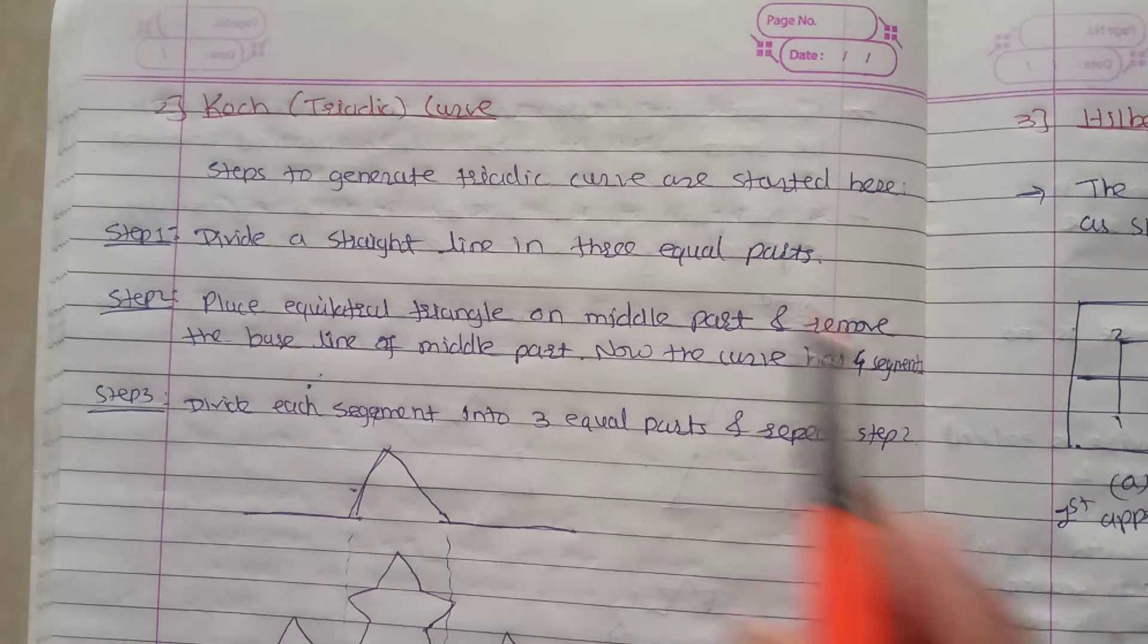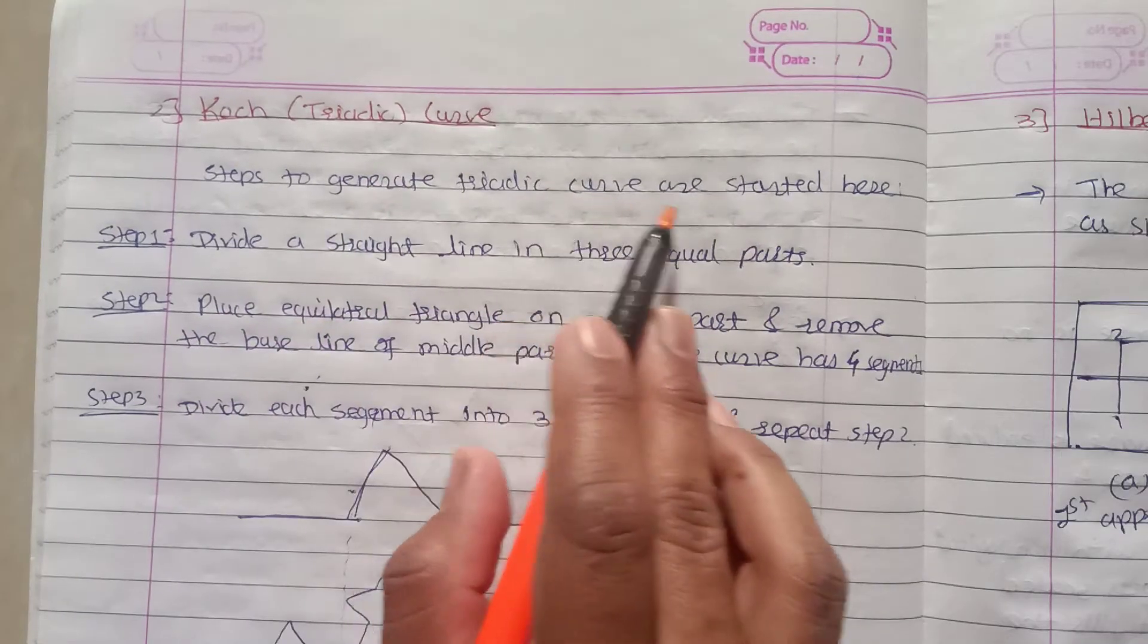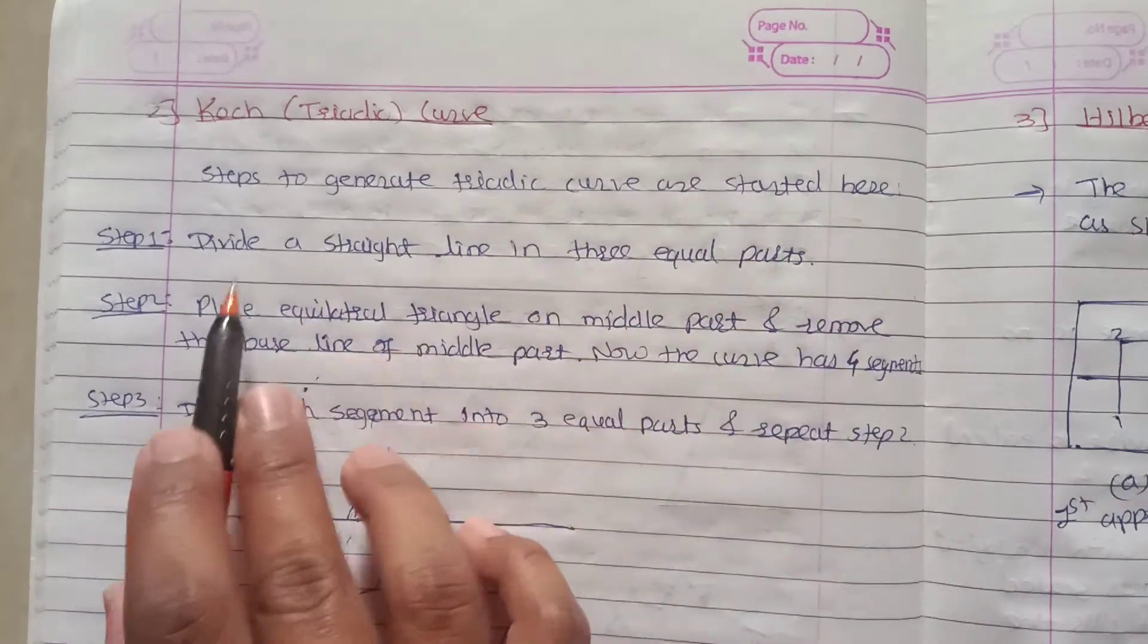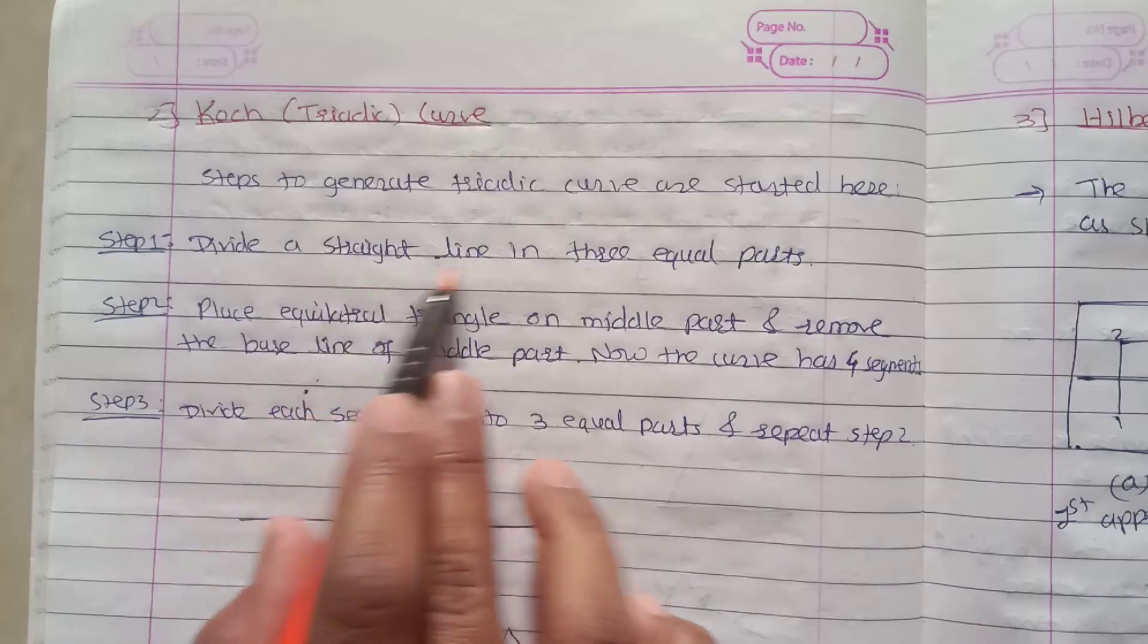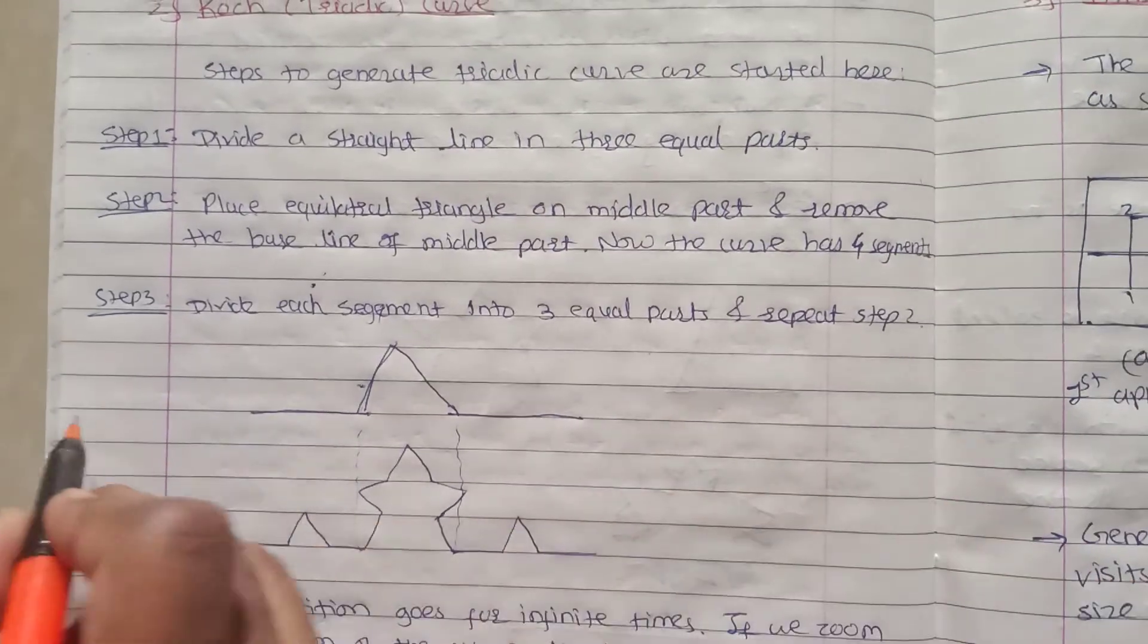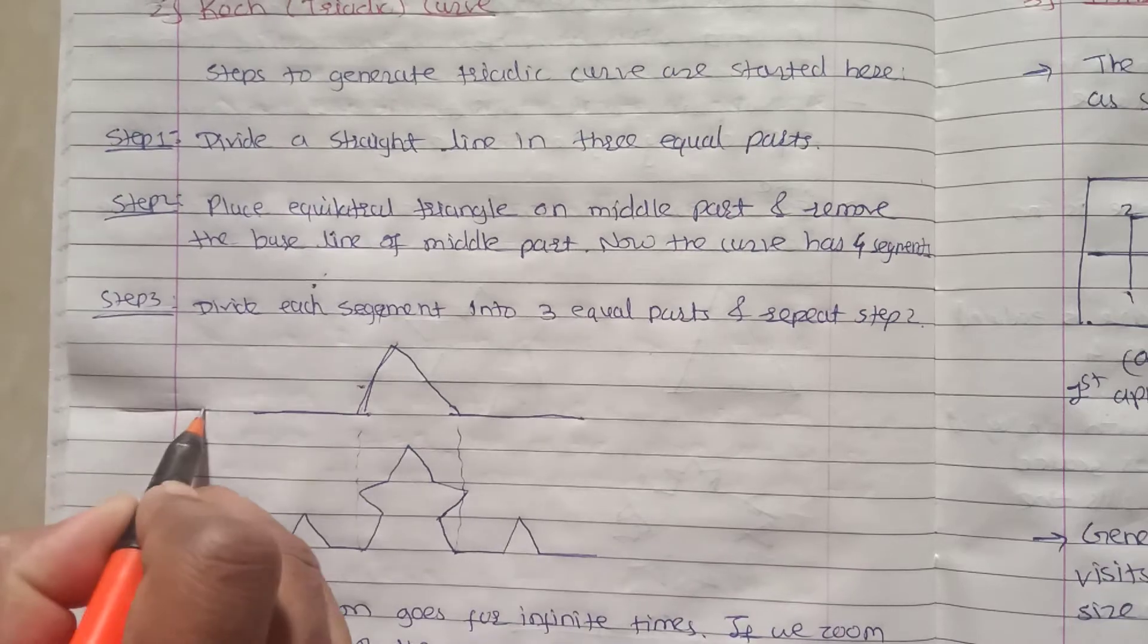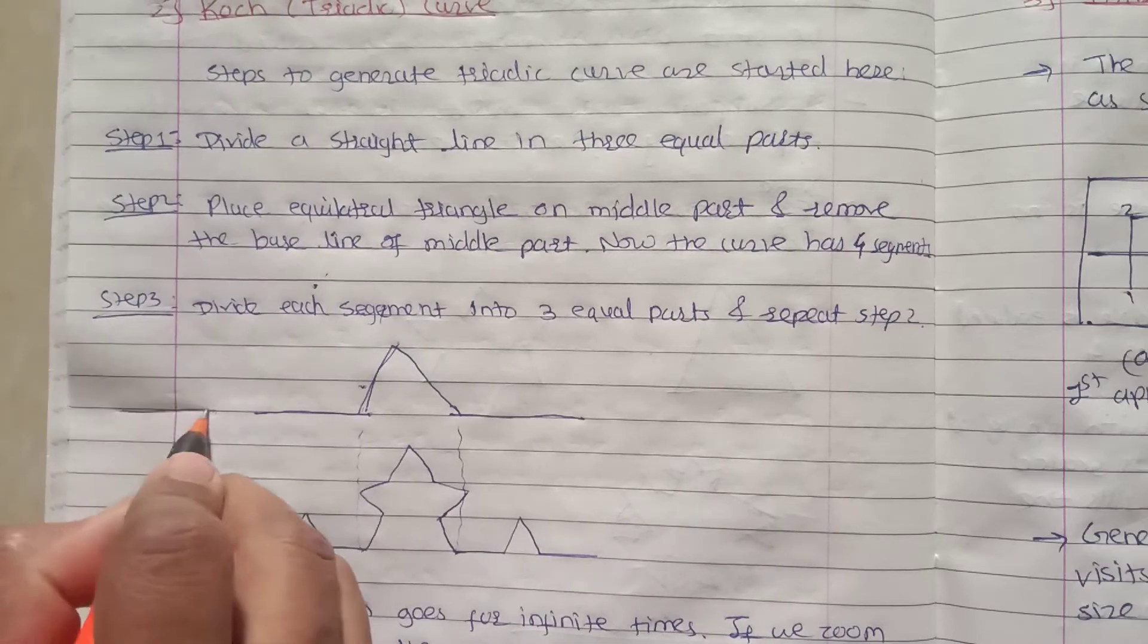So the steps to generate the triadic curve are started here. First step is divide a straight line in three equal parts. So we have divided this straight line into three equal parts.